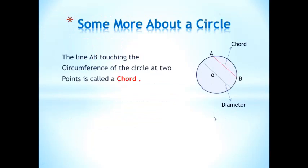Some more about the circle. Dear students, the line AB touching the circumference of the circle at two points is called a chord. This line AB — you can see this is a chord. This line should be touching the circumference at two points.